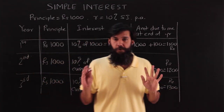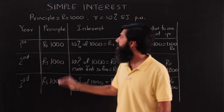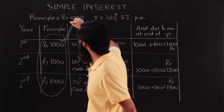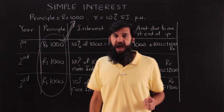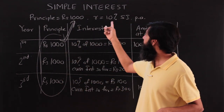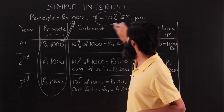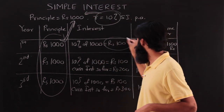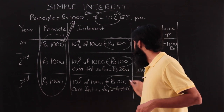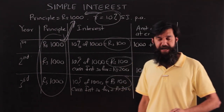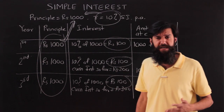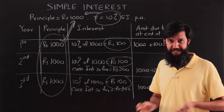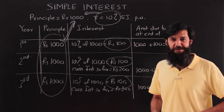The salient point about simple interest: the principal is always the amount kept initially, and I am always going to get 10 percent of that same amount every year — so the interest is 100, 100, 100 each year. We will highlight this again when we see compound interest. Now let us formalize this into a formula.